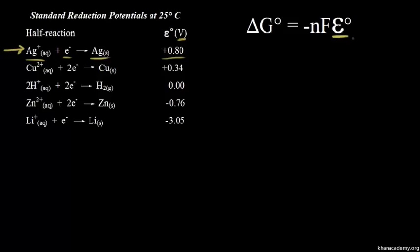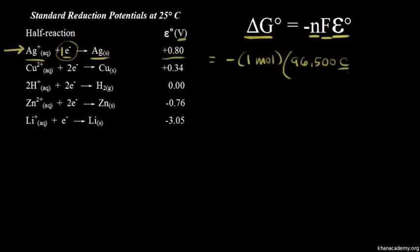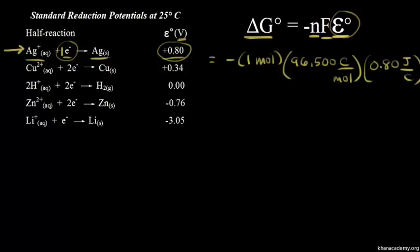From an earlier video, we know if we have the voltage, we can find the standard change in free energy, ΔG°. So for this half reaction, it would be equal to negative n times F times E°. N is the number of moles of electrons, and here we have one mole. F is Faraday's constant, which is 96,500 coulombs per mole — the charge of one mole of electrons. We multiply that by the voltage, 0.80, written as joules per coulomb so the units cancel. Moles cancel, coulombs cancel, and we get our answer in joules: negative 77 kilojoules is the change in free energy that accompanies the formation of one mole of silver.